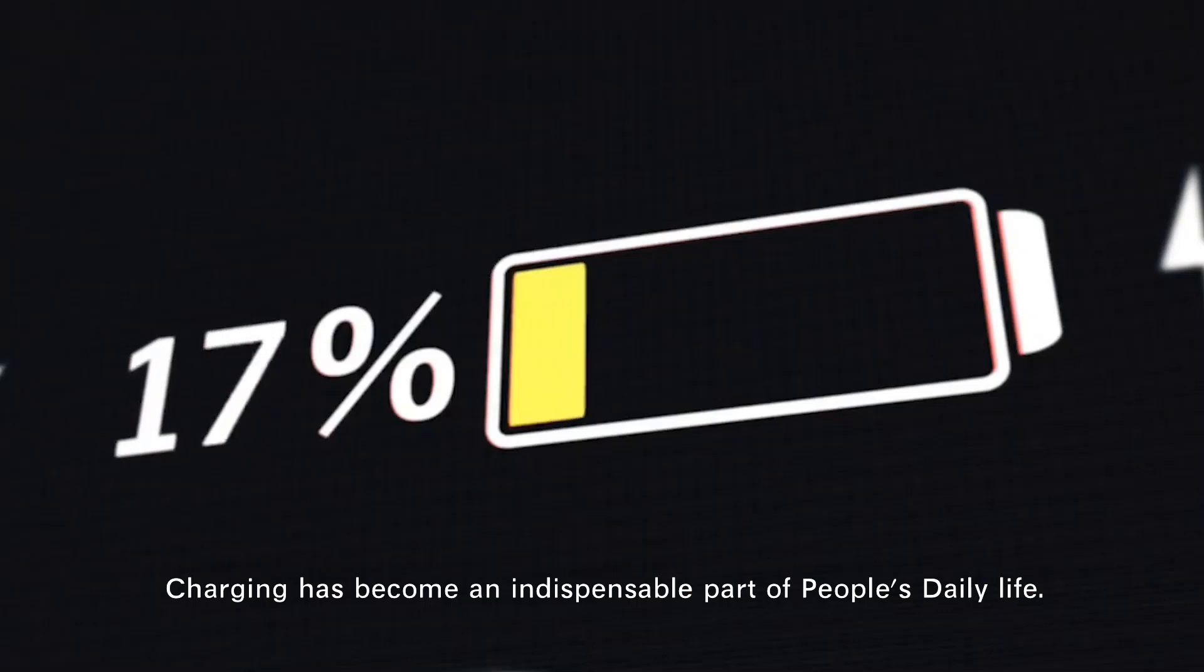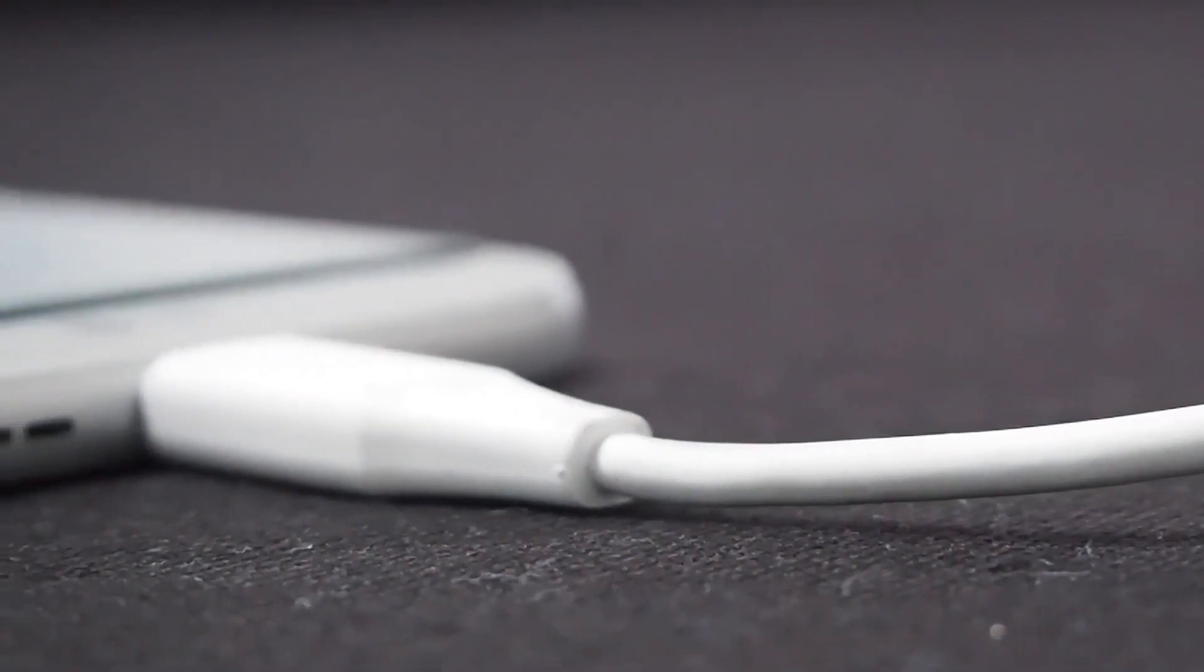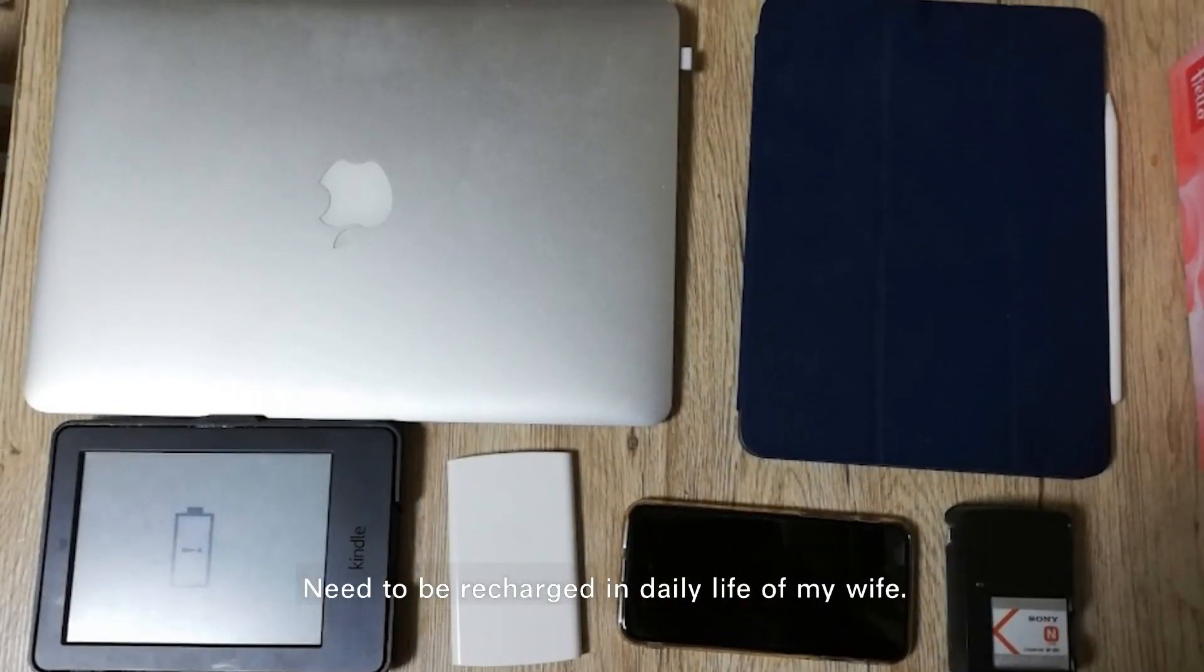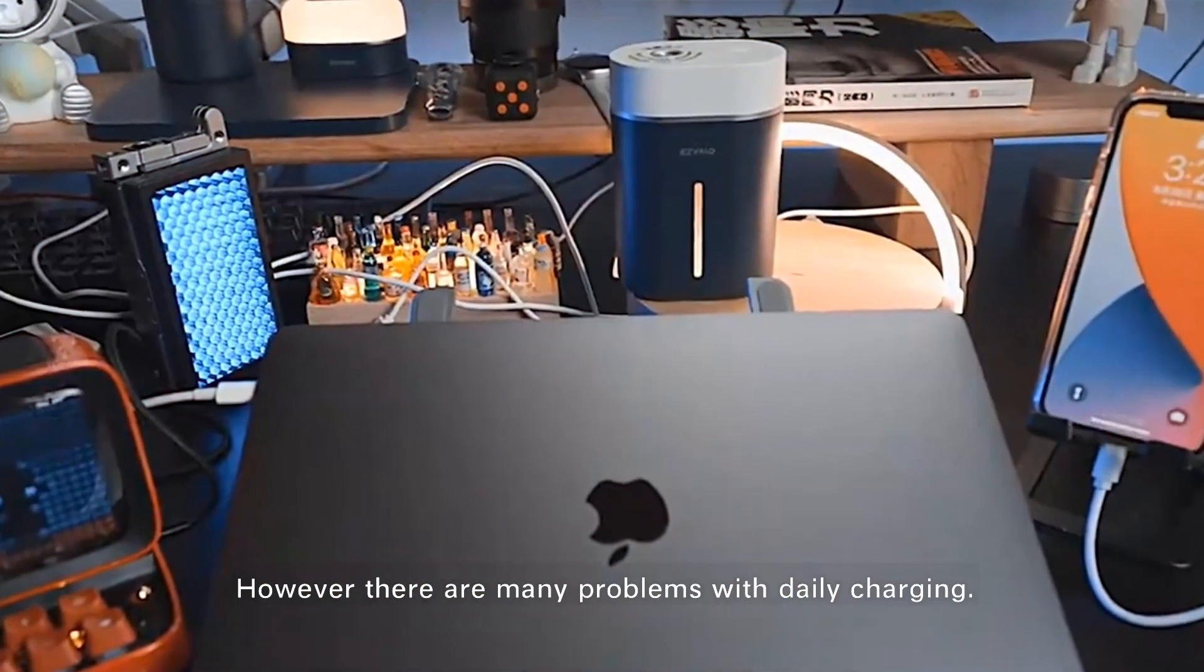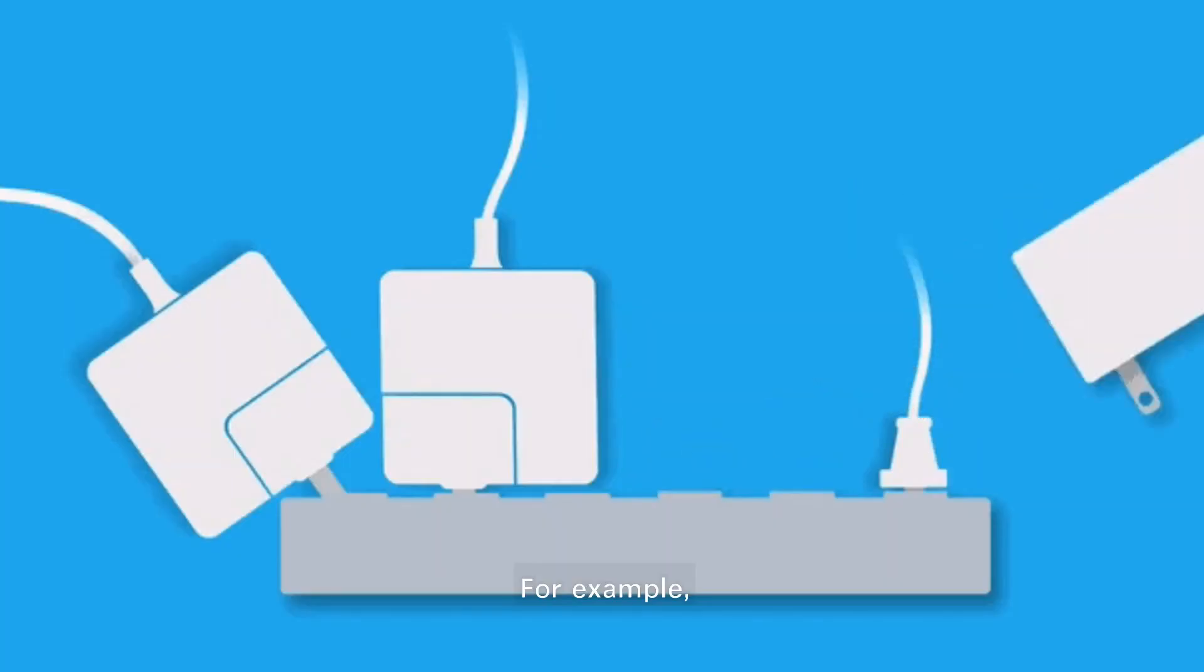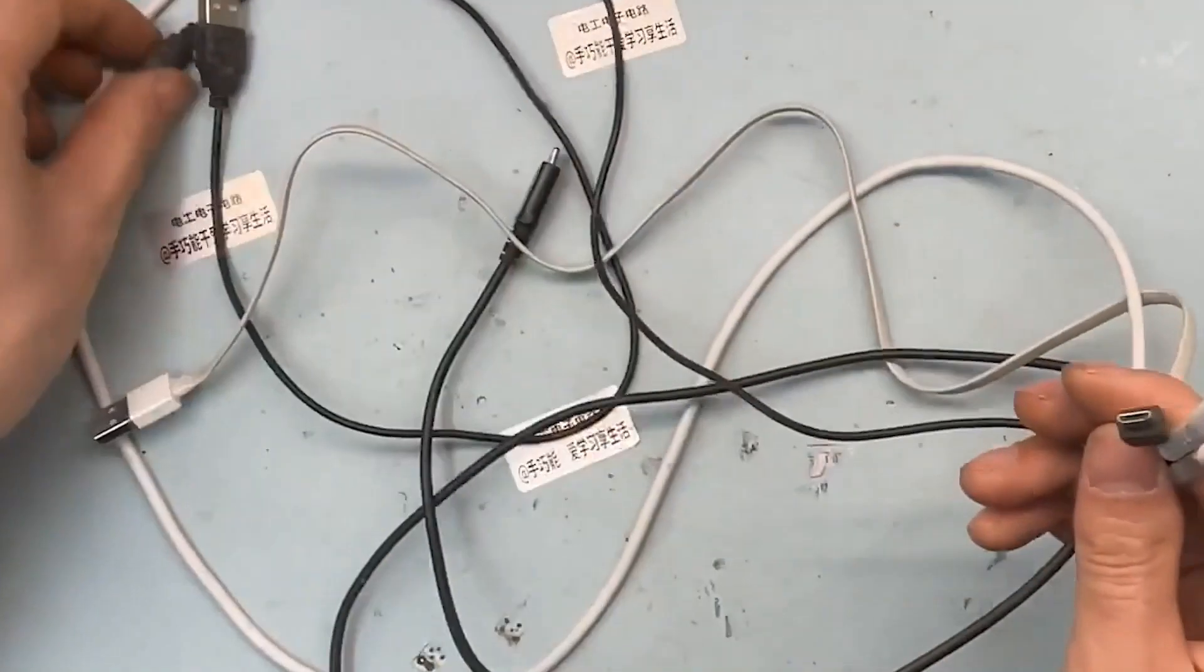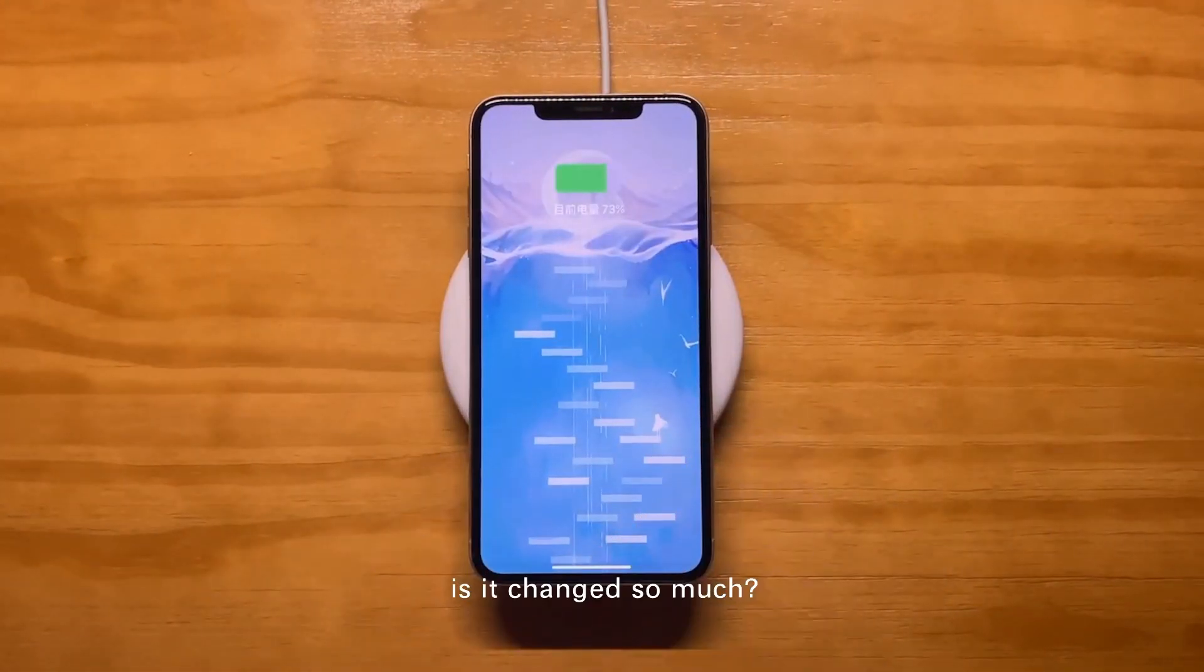Charging has become an indispensable part of people's daily life. Take myself as an example: devices need to be recharged daily for me, my wife, and my daughter. However, there are many problems with daily charging, for example, not enough sockets, charging cables deteriorating, lines getting knotted, etc. Despite the advent of wirelessly coupled charging, has it changed so much?